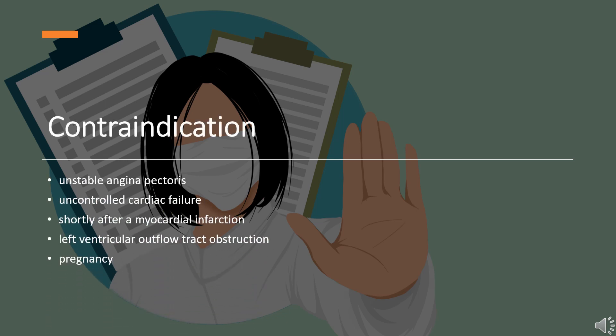Contraindications: Like other dihydropyridines, Lercanidipine is contraindicated in unstable angina pectoris, uncontrolled cardiac failure, shortly after a myocardial infarction, and in patients with left ventricular outflow tract obstruction. It is also contraindicated during pregnancy and in women who may become pregnant, because data regarding safety for the unborn are lacking, as well as in patients with severe liver and renal impairment.